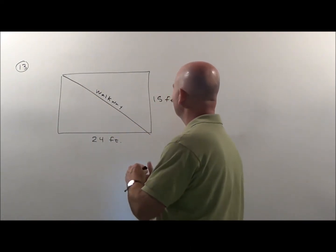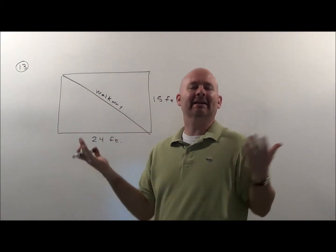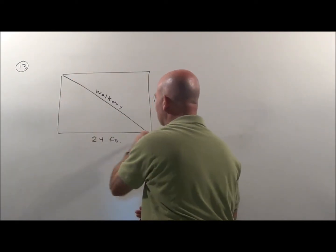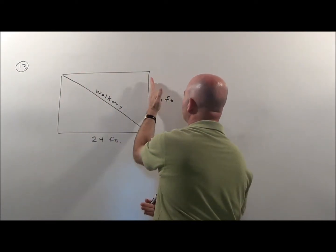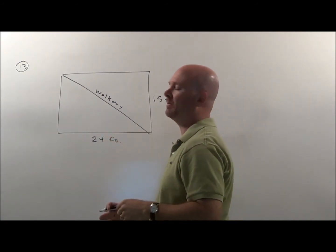Now, as soon as I see it, I'm thinking, wait a second, right triangle. You got a rectangle here with a walkway coming this way, two measurements given, it's got to be a right triangle.